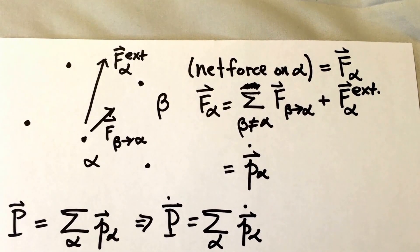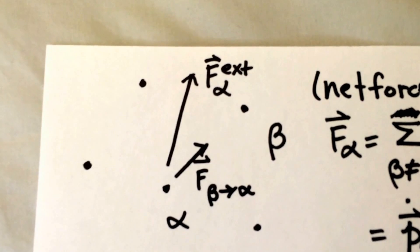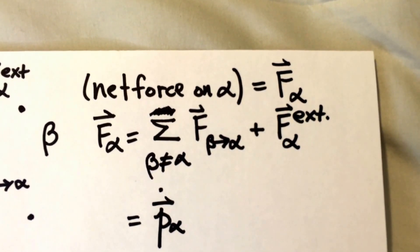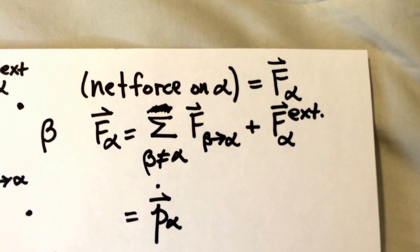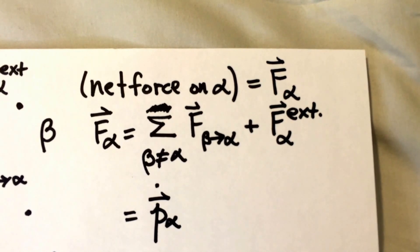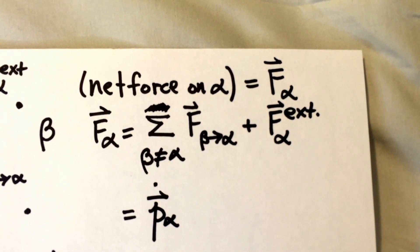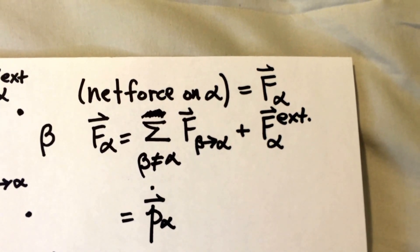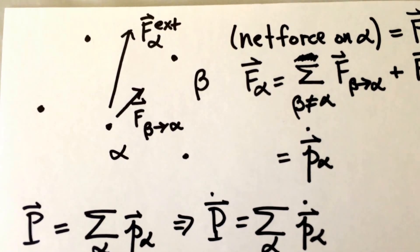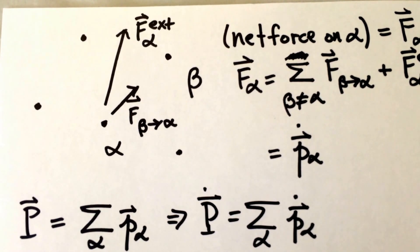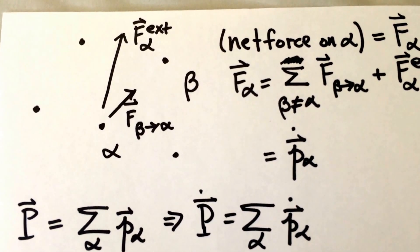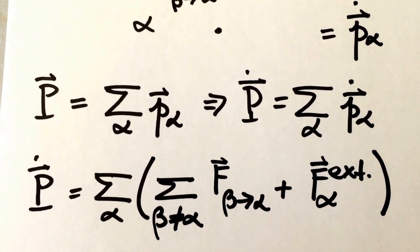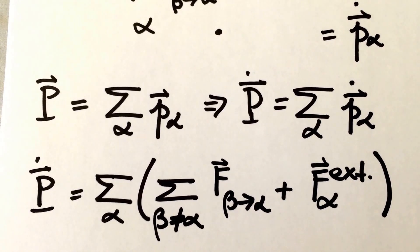We can easily generalize these expressions for two particles to an arbitrarily large number of particles. If this is our system of particles, with particle alpha being acted upon by particle beta, the net force on particle alpha — F alpha vector — is the sum over beta not equal to alpha of the force from particle beta on alpha, plus all the external forces on alpha. According to Newton's second law, that sum of forces equals the time derivative of alpha's momentum vector. We can sum over all particles alpha in our system to get the total momentum vector P and its time derivative P dot.